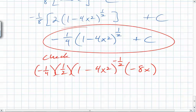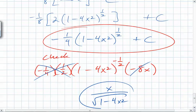You see what's going to happen here? What does the negative 8 cancel with? Both of those. And what are you left with? X over the square root of 1 minus 4x squared. Did that check? It sure did.